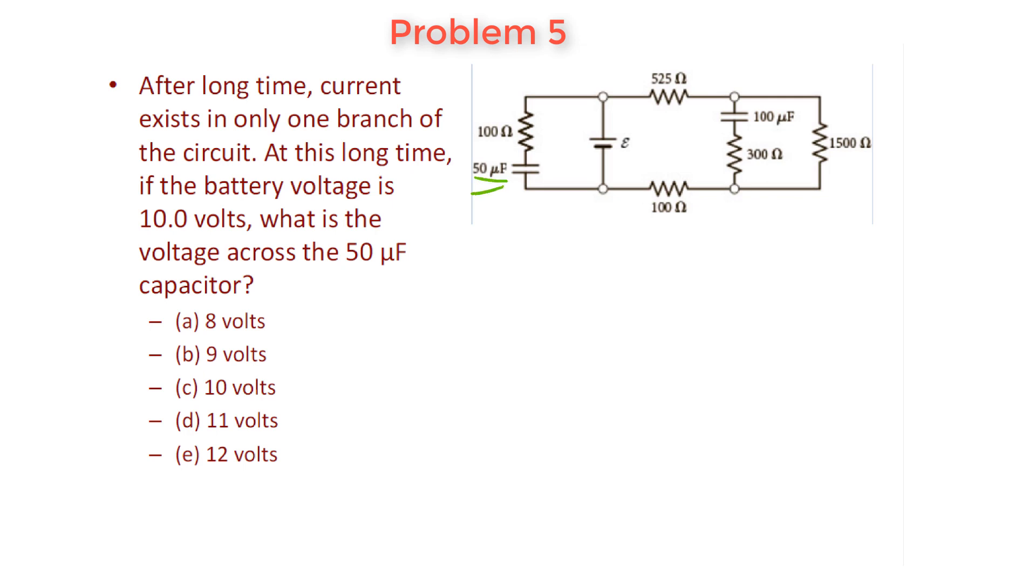They tell us that we have 10 volts, and the key to this problem is that it's after a long period of time. After a long period of time, whatever branch in the circuit has a capacitor - so this branch and also this branch - the current is going to be equal to zero in both of those branches.